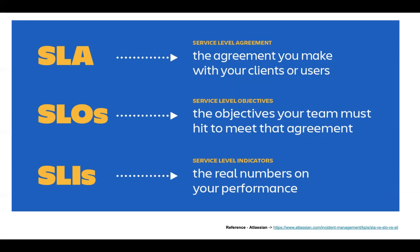The third thing is SLI — Service Level Indicator. It is the actual performance of your service, the real numbers of what your service is doing. For example, you promised your customer that your service is available 99% of the time, but actually your service is only available 95% of the time — that is your SLI. If your service is available 100% of the time, your SLI is much better than what you promised.